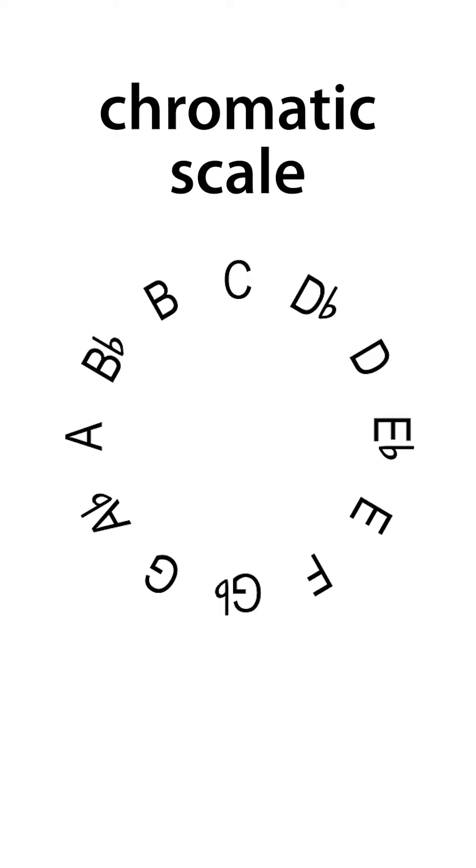To show you what I mean, let's start with the chromatic scale wrapped into a loop like this, where the pattern repeats in a circle. C, Db, D, Eb, etc.